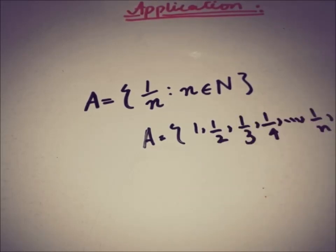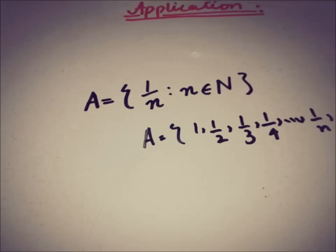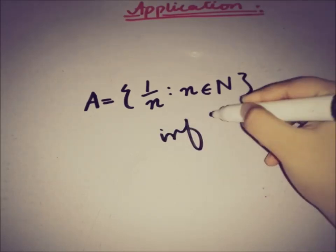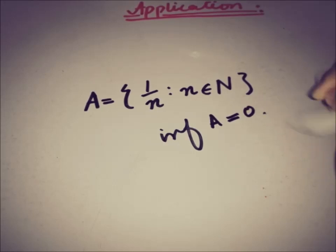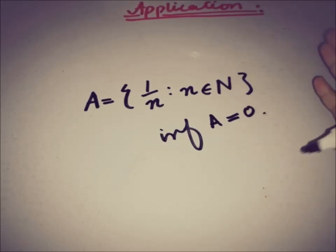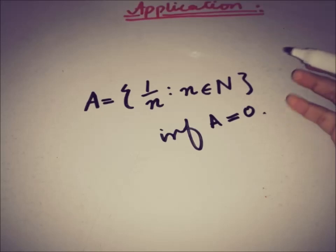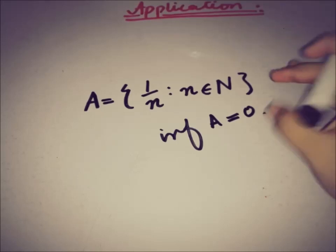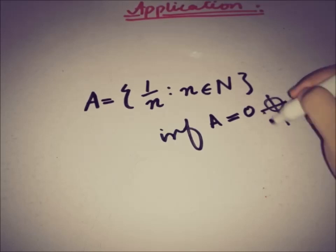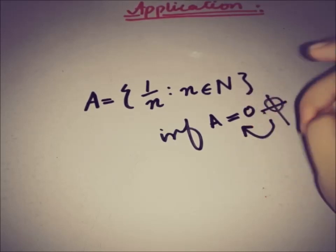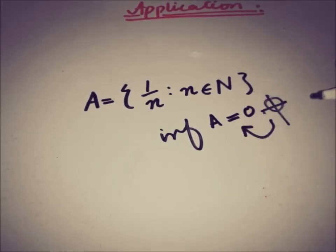These are the infinite elements in A. We will prove that the infimum of the set A is equal to 0 by using the Archimedean property. This is the application: for a set of this kind, we can find the infimum using the Archimedean property.